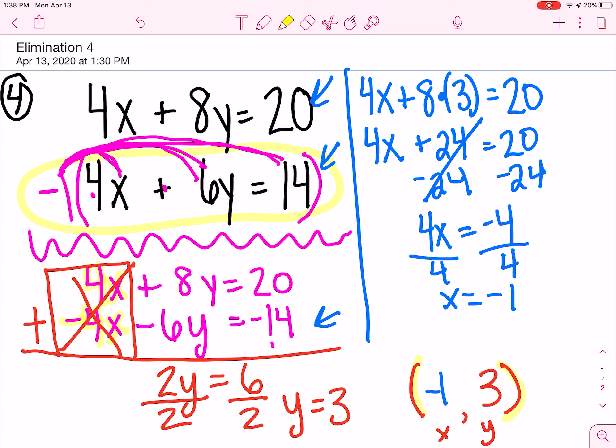So, our solution is at negative 1 comma 3. So, the only new part here was when we had to multiply everything by that negative 1 to make the opposite. There are not very many problems like this, but I wanted to show you. Great work, guys!